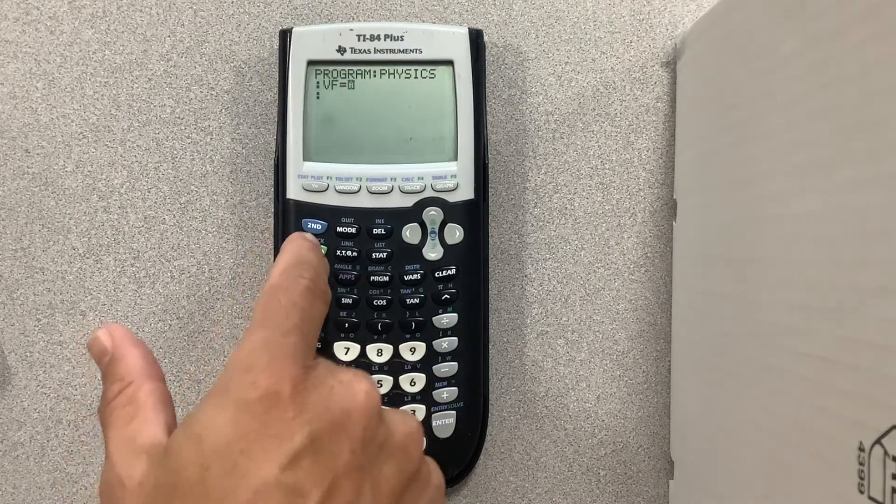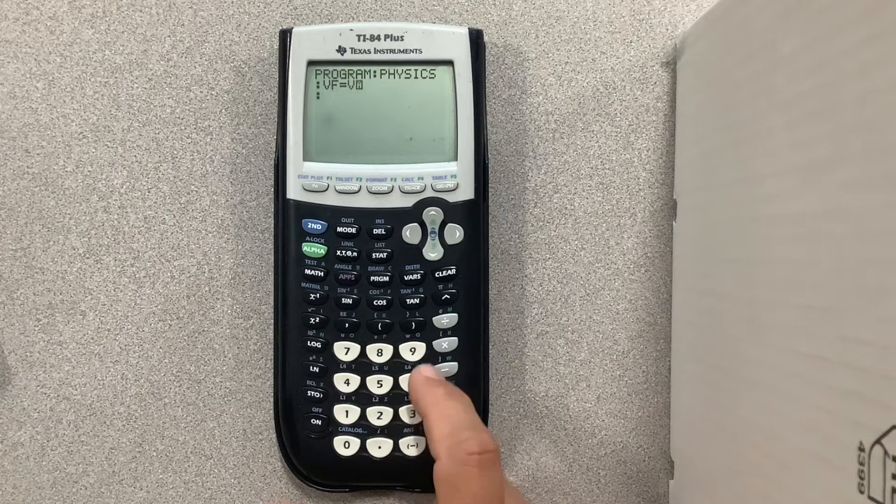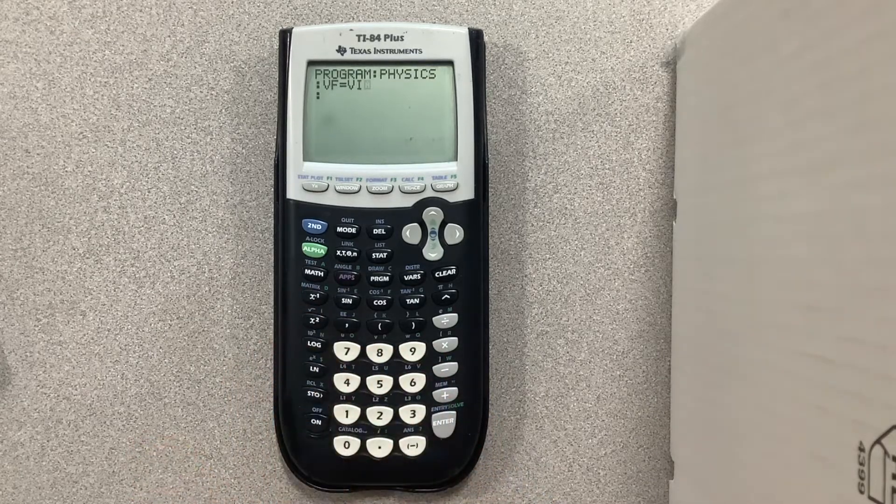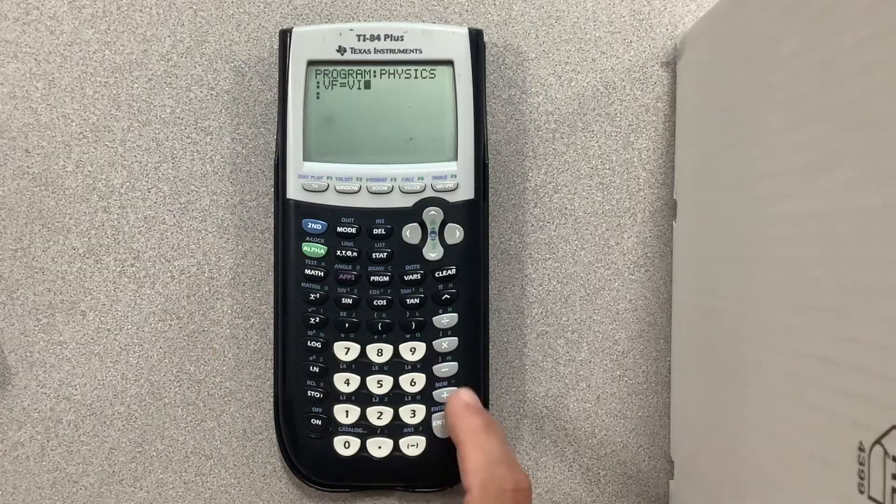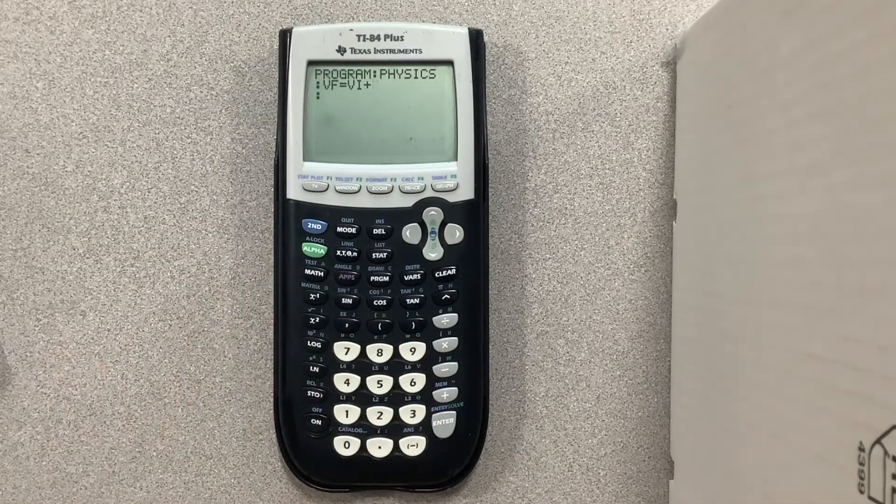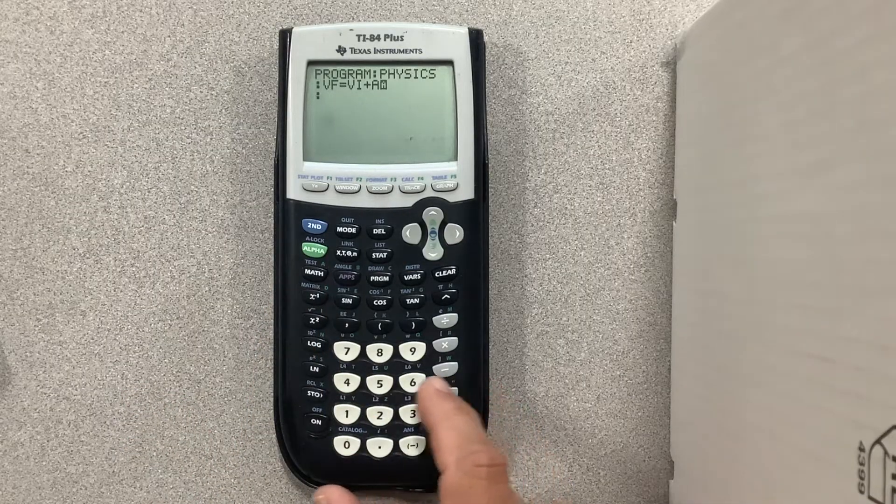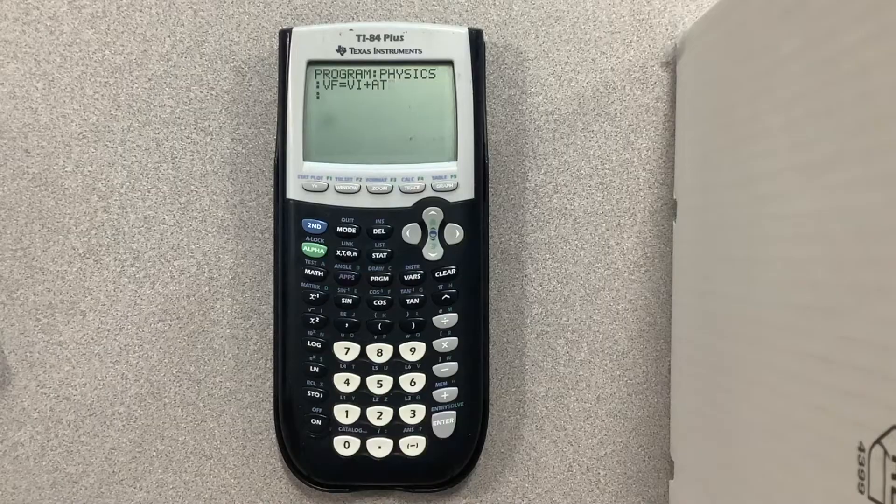Now I go back into second alpha lock and I type in the rest of the equation. Vi. Exit alpha lock, hit the plus sign. Re-enter alpha lock and type a. There is no delta so t. That's one motion equation.